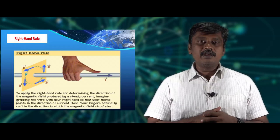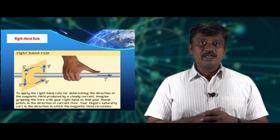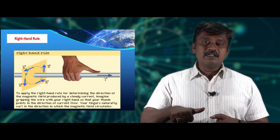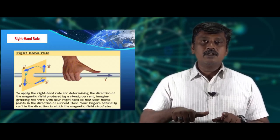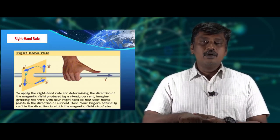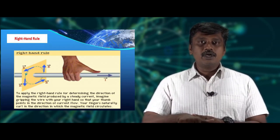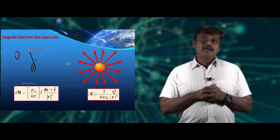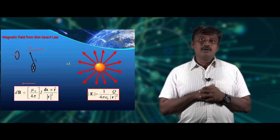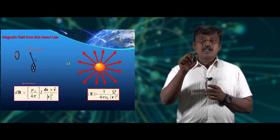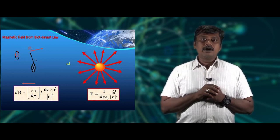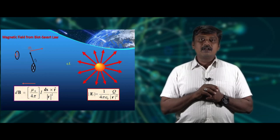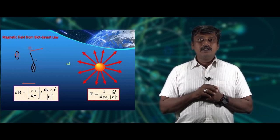We can also use the right hand to find the magnetic induction direction due to a steady current. Wrap the wire with your fingers such that the curling of the fingers denotes the magnetic field direction and the thumb denotes the direction of the current through the wire. It is also possible to find the direction for a current carrying loop — if the current flows in an anti-clockwise direction, the magnetic induction at the central point will be perpendicular to the plane of the loop.